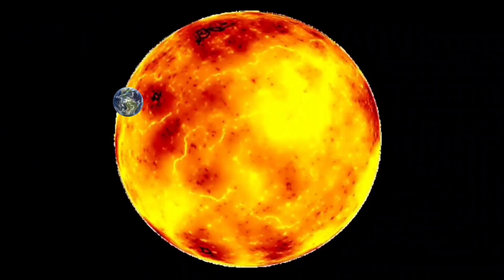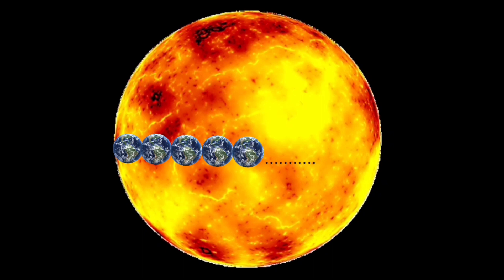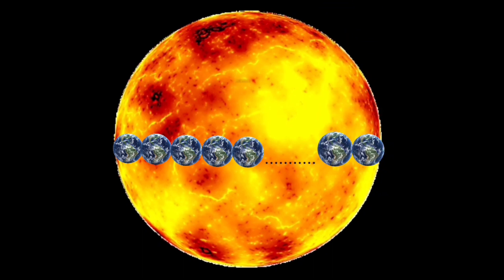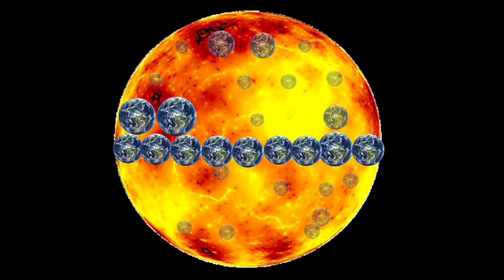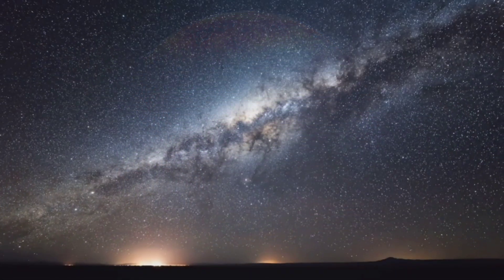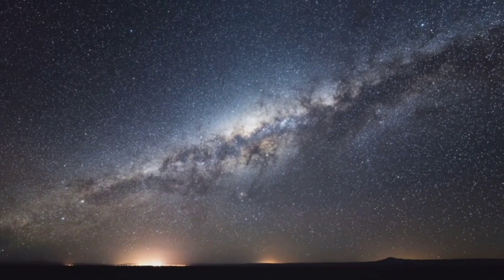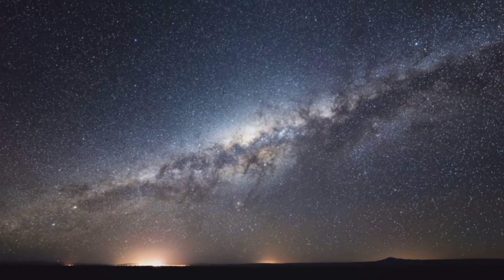To cut the long story short, the diameter of the sun is 109 times that of the earth — almost 109 earths can be placed side by side along the sun's diameter. Almost 2.3 million earths can be accommodated inside the volume of the sun. According to its size, it ranks in the top 10% of stars in our galaxy.